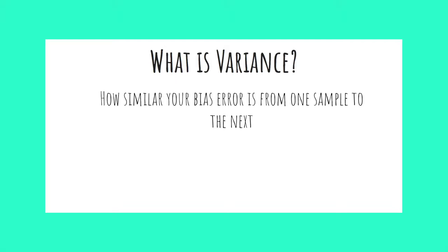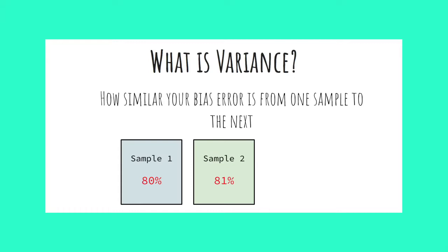Variance is how similar your bias error remains from sample to sample. Consider a case where 3 random samples of 100 data points were taken and predictions were made for each. In one sample, 80 out of 100 predictions were correct; in the second, 81 were correct; and in the third, 80 were again correct. We could say this model has low variance because each sample produces very similar bias errors.